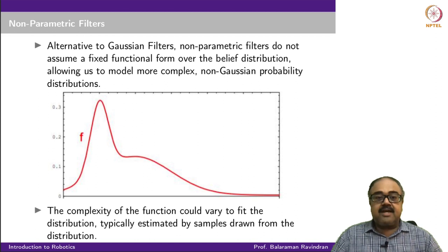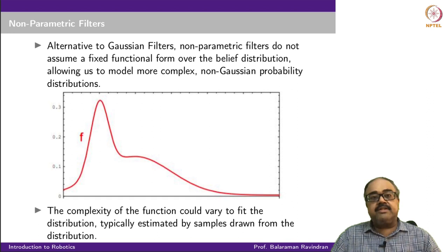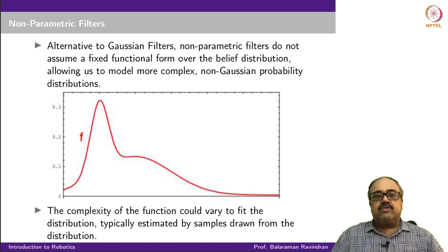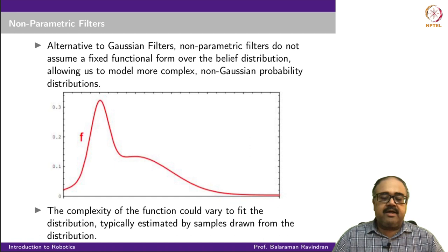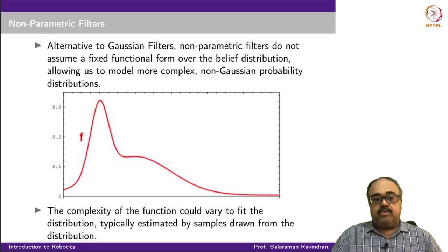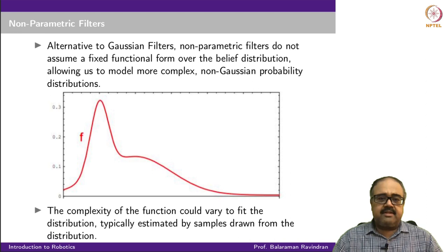Remember the problem with Gaussian distributions: there had to be one hypothesis thought most likely, with a small amount of noise around it. We could not support multiple modes — it had to be a unimodal belief state. Non-parametric filters allow us to get around that. In this lecture we look at a specific non-parametric filter called the particle filter.